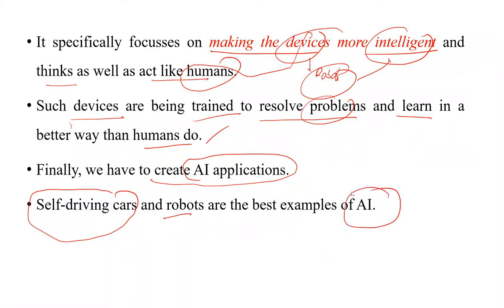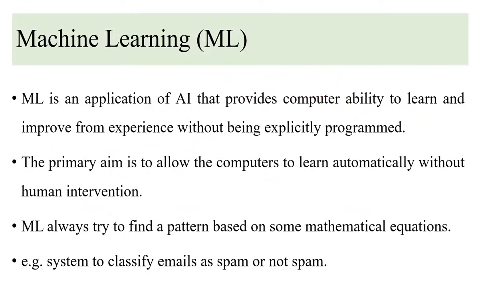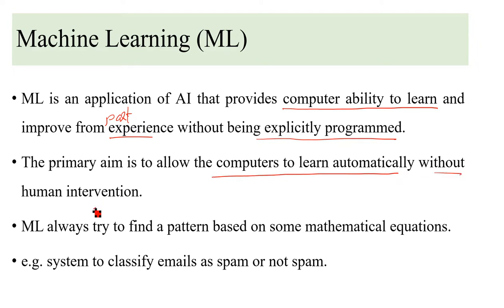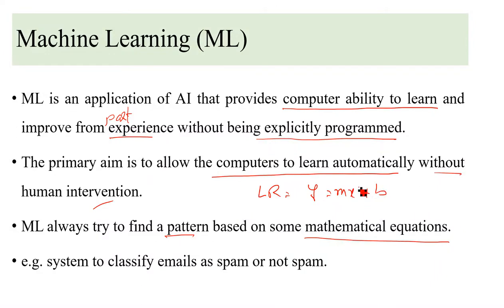Machine learning is an application of artificial intelligence that provides computers the ability to learn and improve from experience without being explicitly programmed. The primary aim is to allow computers to learn automatically without human interventions. Machine learning always tries to find patterns based on some mathematical equations. For example, linear regression uses the equation y = mx + b, where x is the input variable and y is the target variable, to predict outcomes.